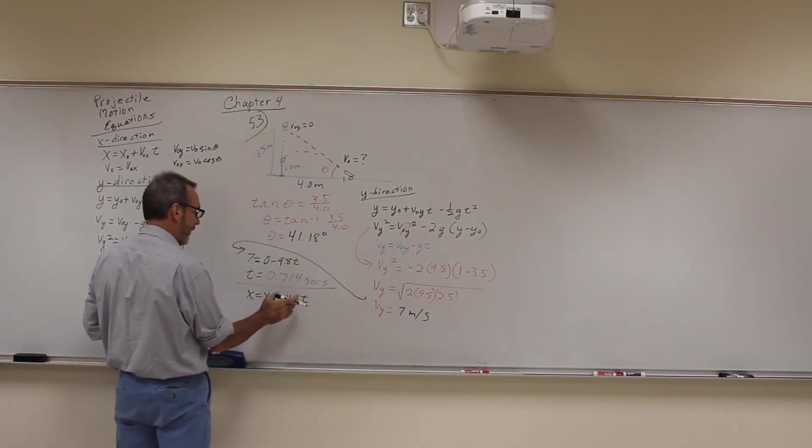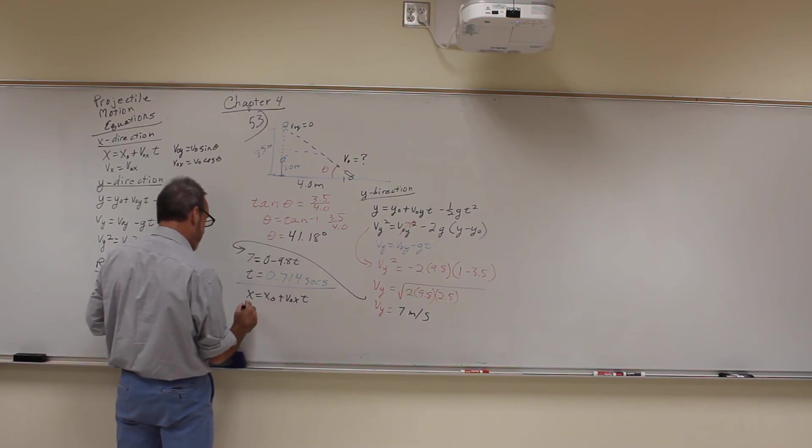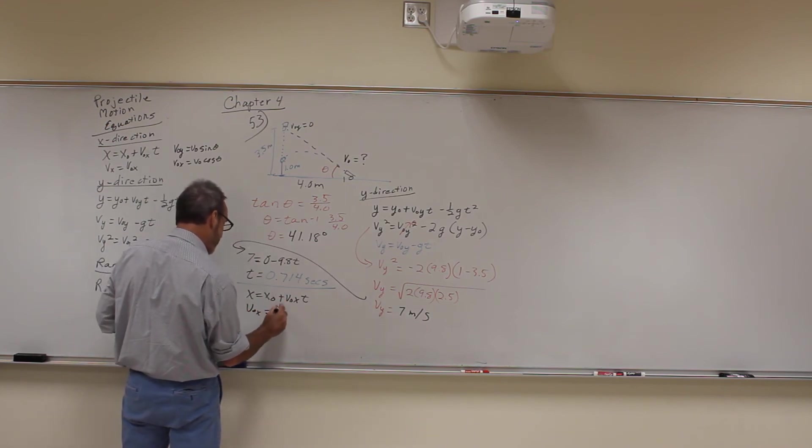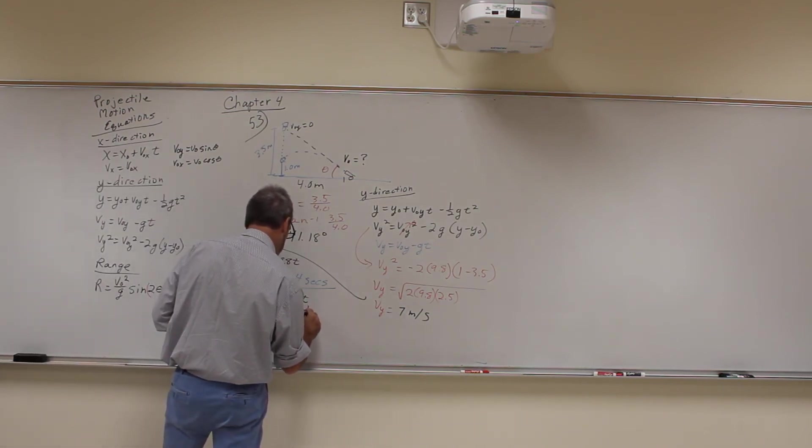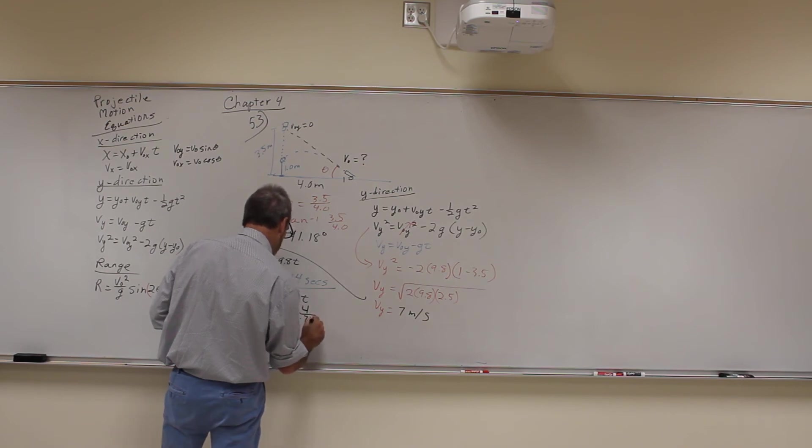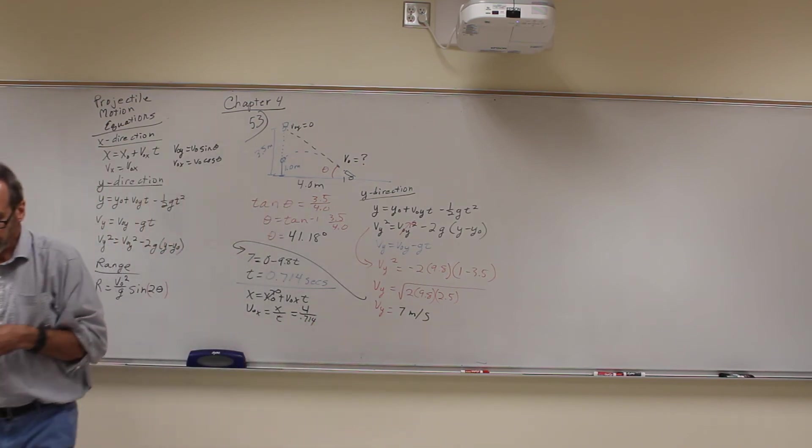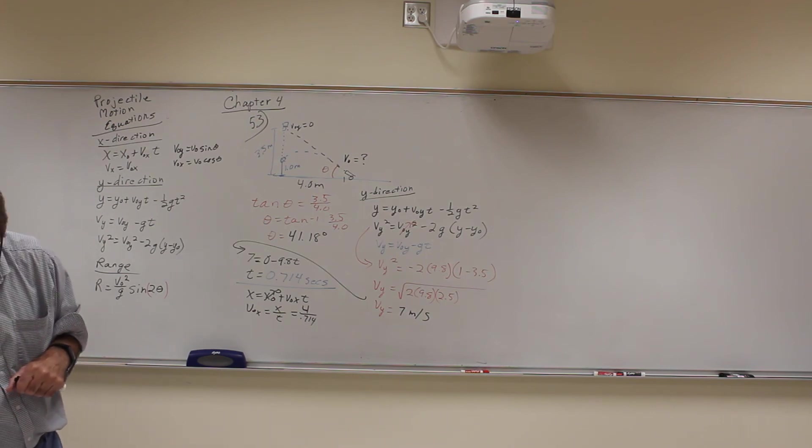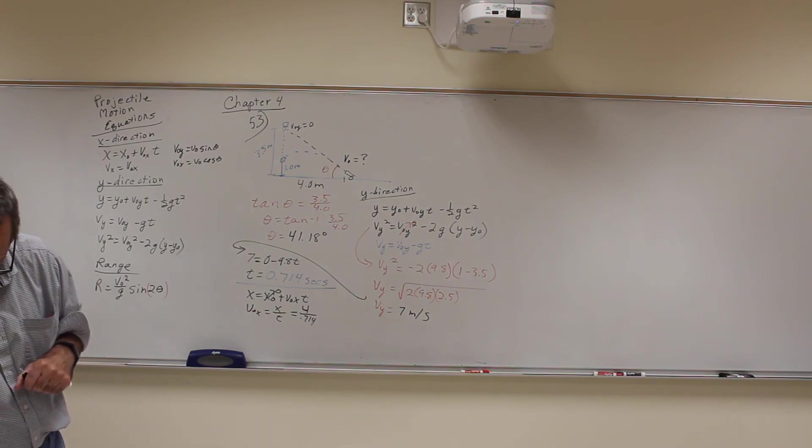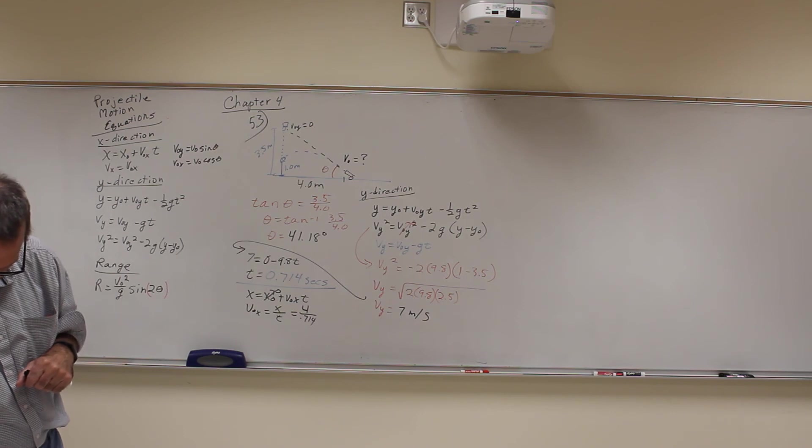We're going to solve it for V naught X. So V naught X is just going to be x over T because that's equal to 0. And we know that that's just going to be 4 over 0.714. And when you do that, you get 4 divided by 0.714.